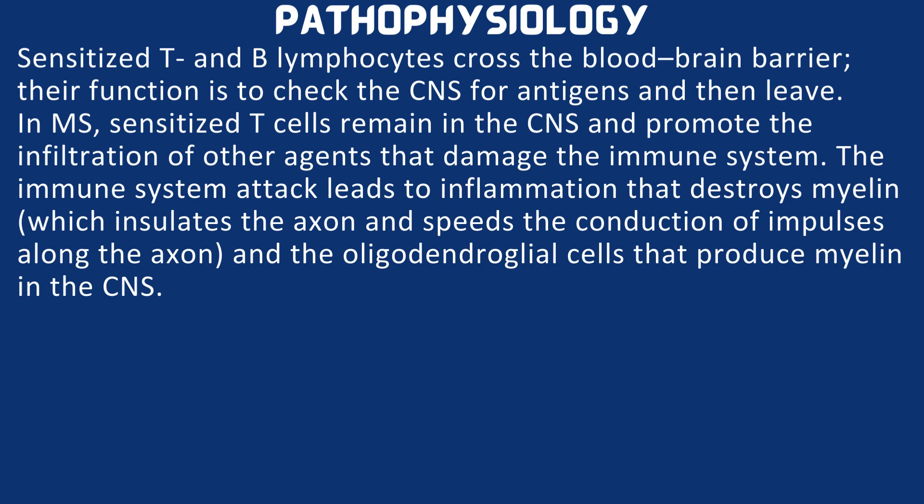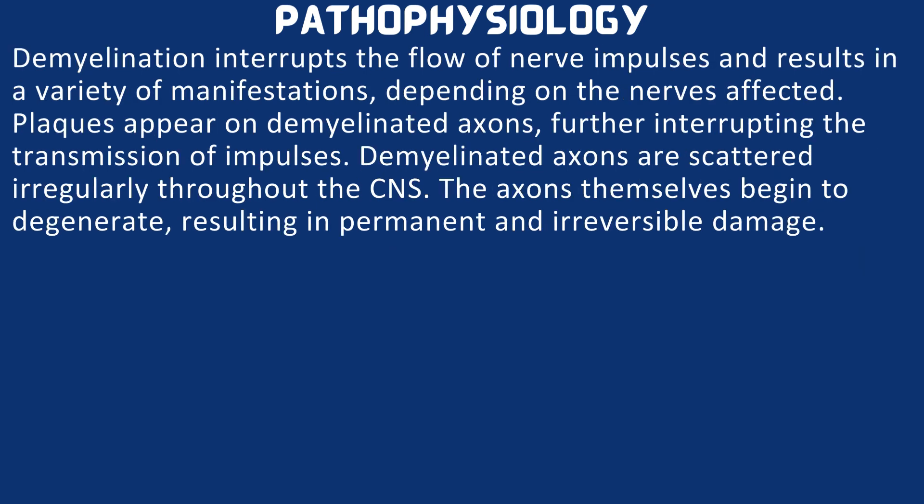The immune system attack leads to inflammation that destroys the myelin, which insulates the axon and speeds the conduction of impulses along the axon, and the oligodendroglial cells that produce myelin in the CNS. Demyelination disrupts the flow of nerve impulses and results in a variety of manifestations depending on the nerve affected. Breaks appear on demyelinated axons further interrupting transmission. Demyelinated axons are scattered irregularly throughout the CNS, and the axons themselves begin to degenerate resulting in permanent and irreversible damage.